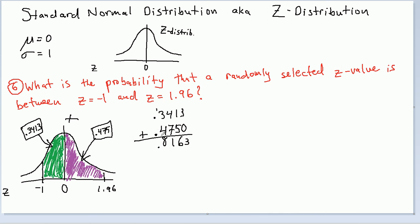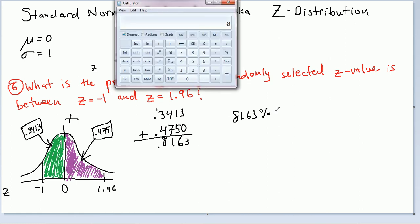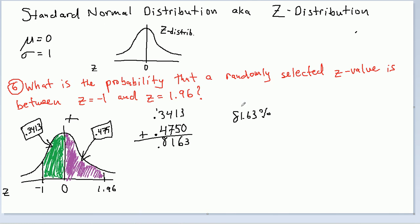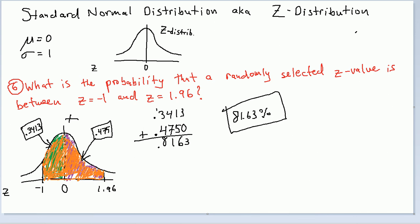We get 81.63%. Let's just check that quickly: 0.3413 plus 0.475 equals 81.63%. Perfect — that is our final answer. The two colors were just so you can see that we had to do it in two steps and then add the two areas together, but really what we got was one total area — this whole thing is equal to 81.63%.